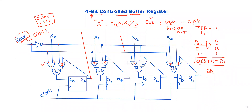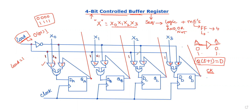The final outputs are QA, QB, QC, and QD. When load equals 1, the D inputs are DA=X0, DB=X1, DC=X2, DD=X3. The output depends on the second input: the output of the OR gate is X0, and the first AND gate output is X1, X2, X3 respectively. So QA equals X0, QB equals X1, QC equals X2, QD equals X3.